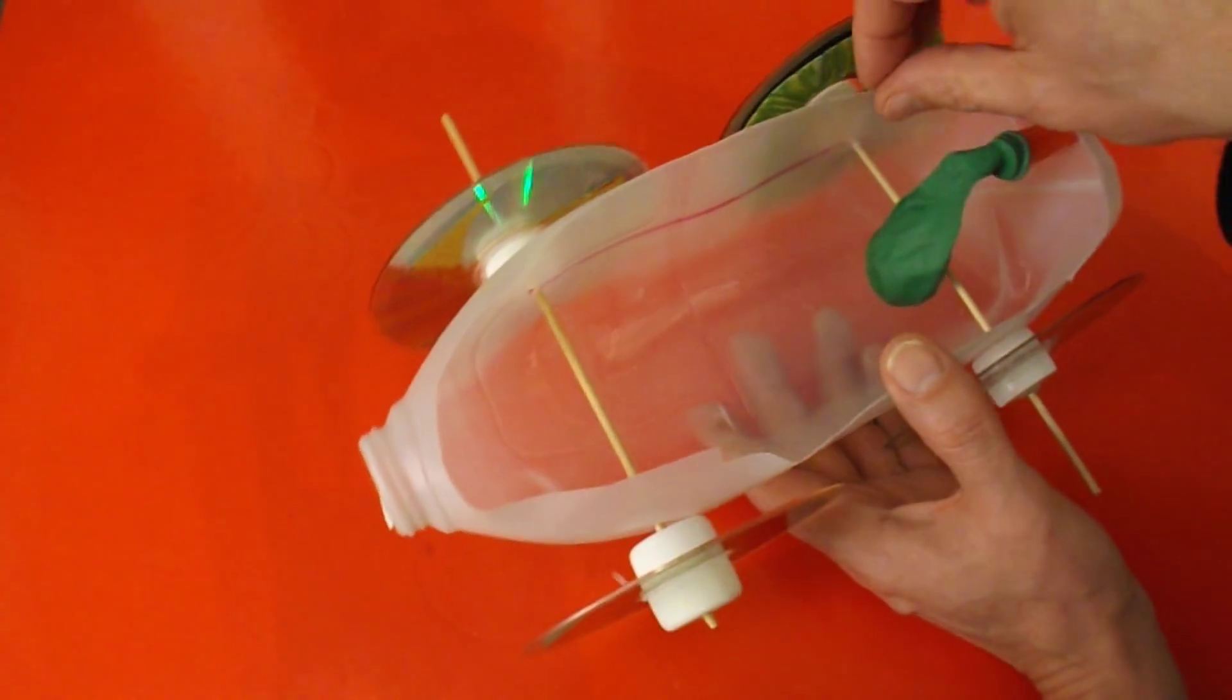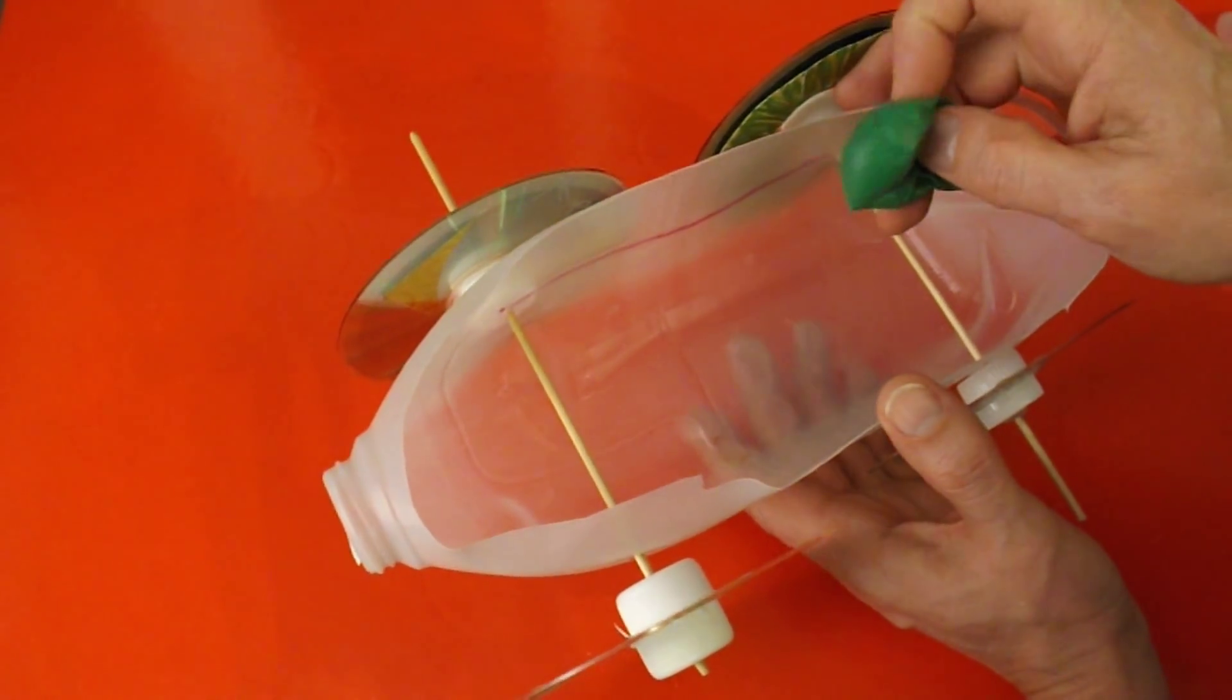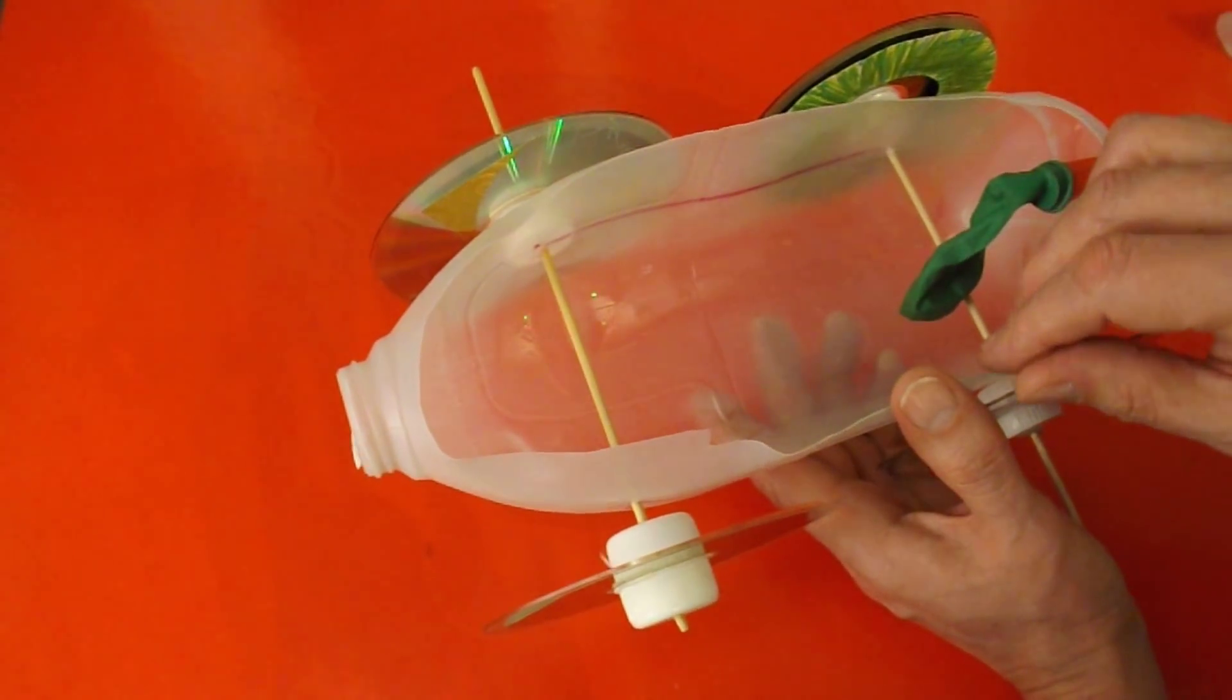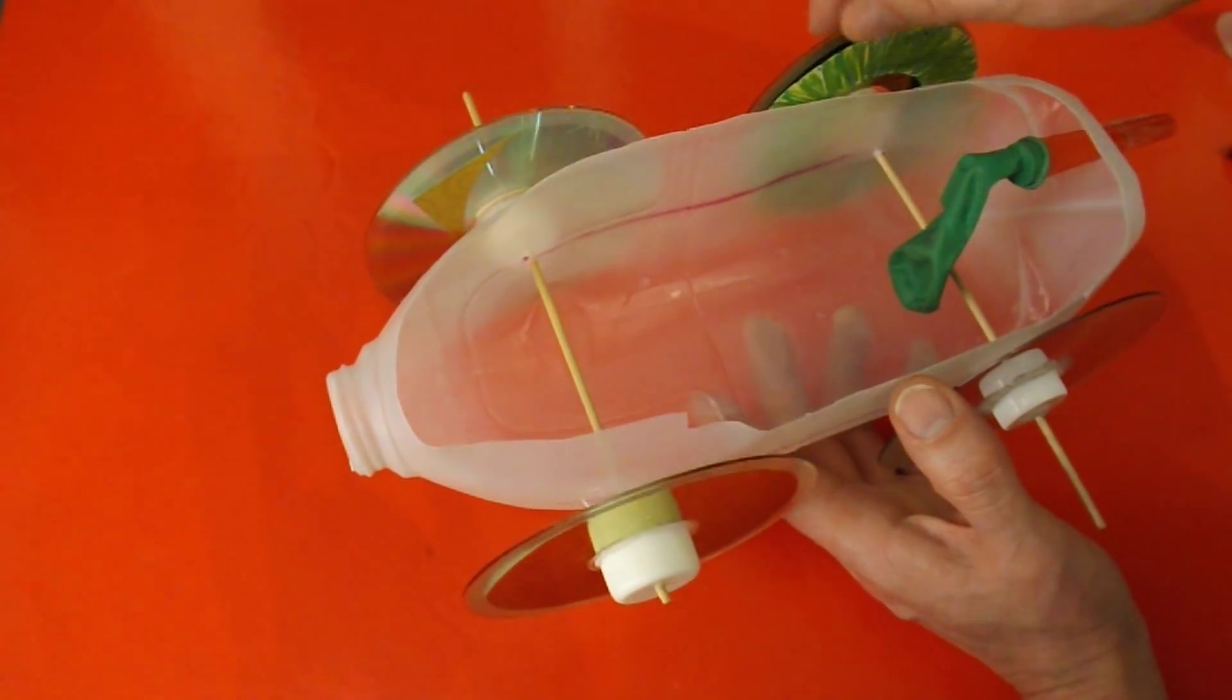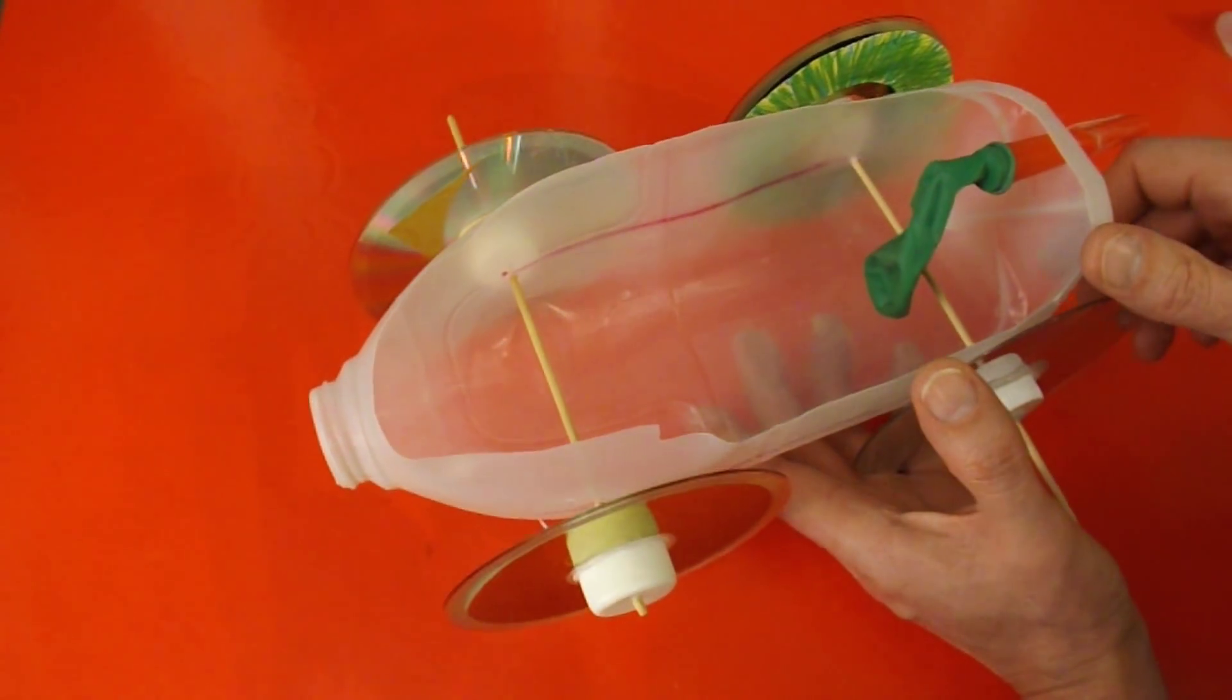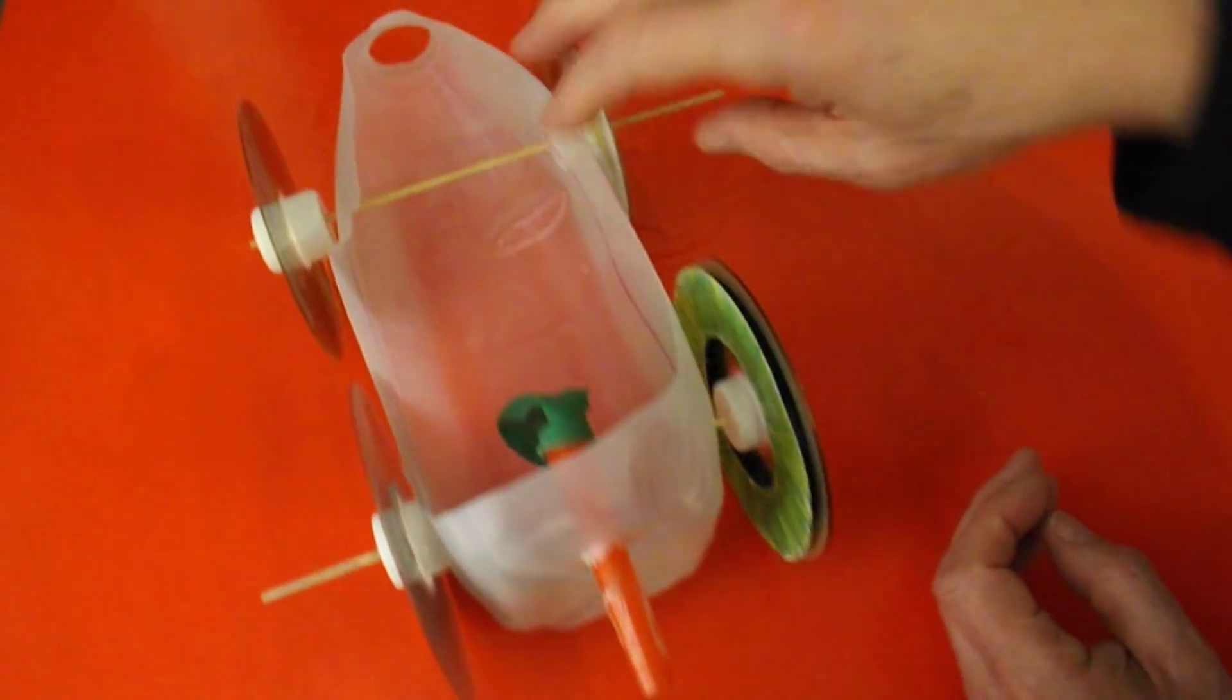The other thing you might want to do is either cover these edges with tape or trim them down a little bit more. Because as you probably heard I managed to burst one of the balloons and I think it may have been on the sharp edge. So you might want to think about that. The advantage of keeping those sides quite high is it means the balloons won't rub against the wheels. And if they rub against the wheels it will slow the car down. So it might just be better to put some sticky tape over there or something. Stop there being any sharp edges. But that's it. Job done.